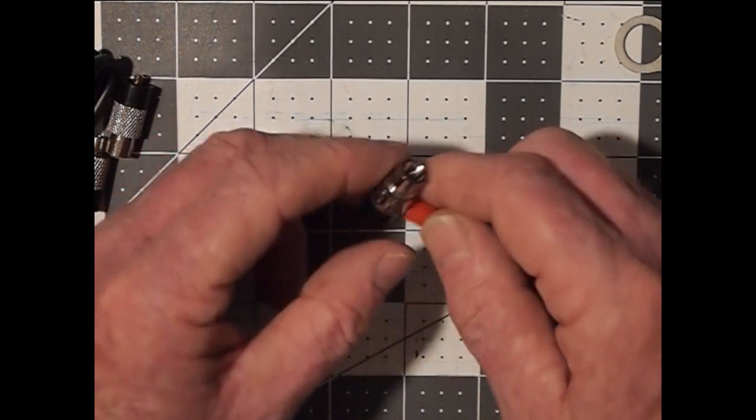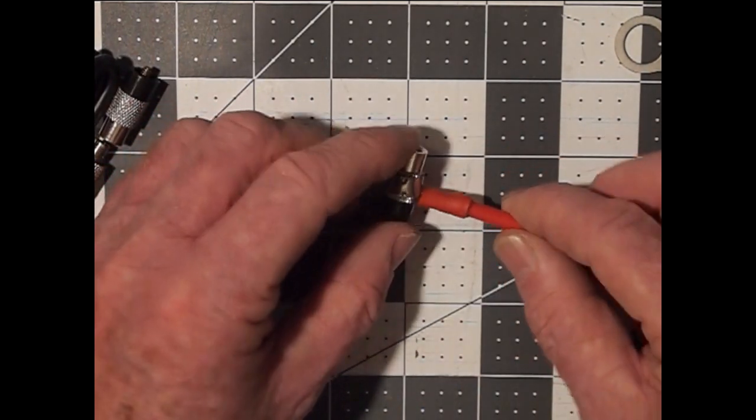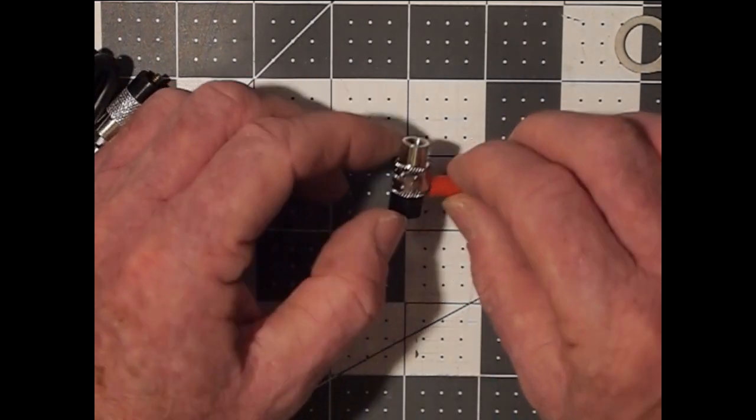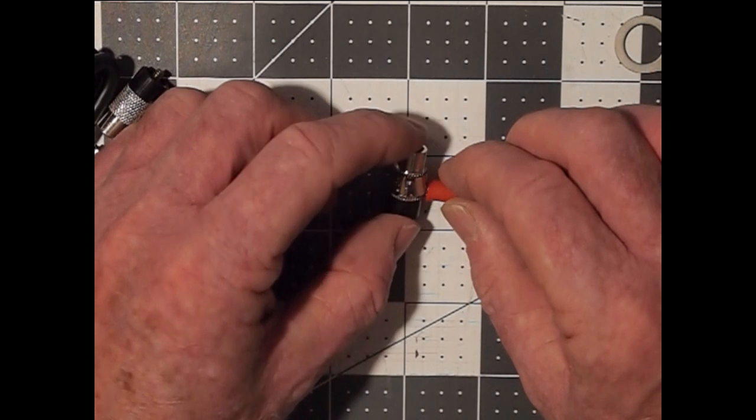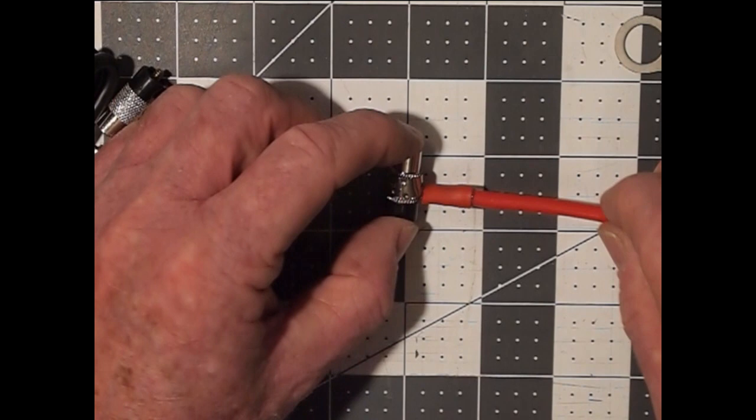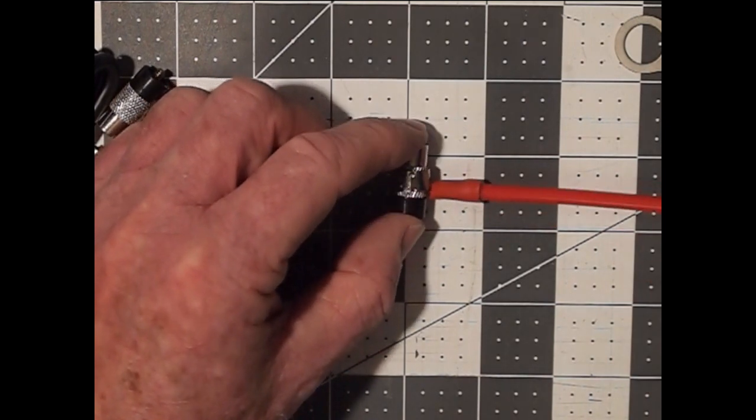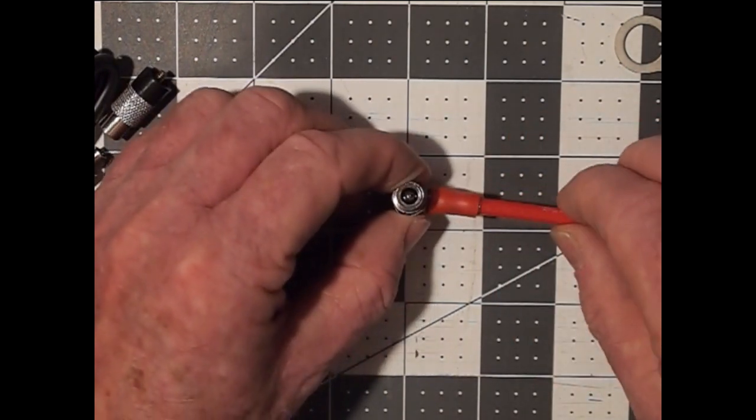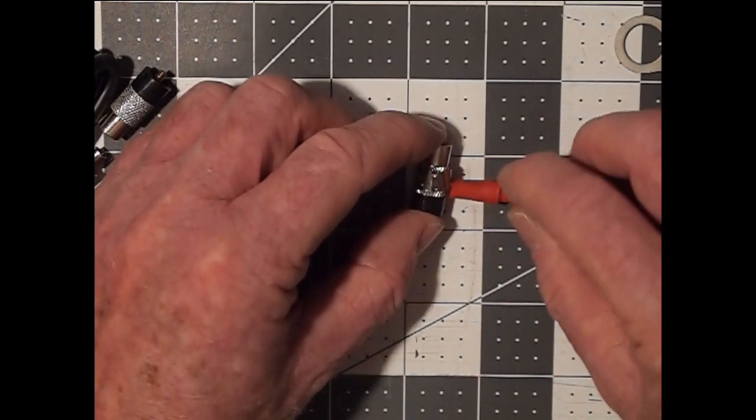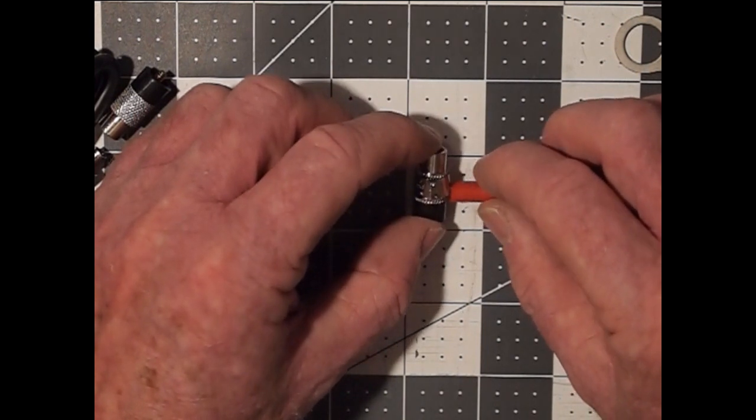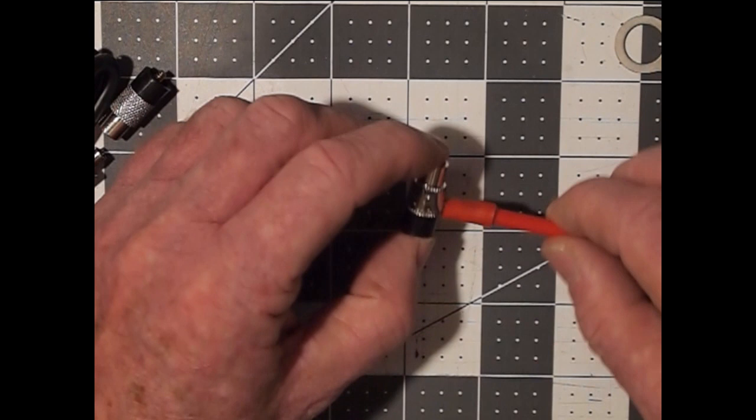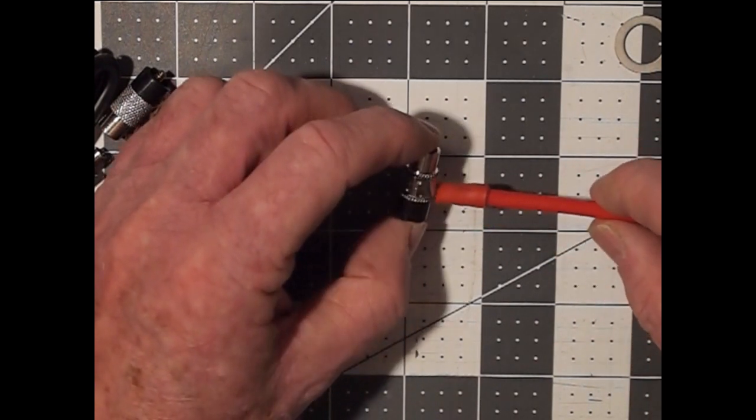Another benefit of that is now your counterpoise or rat tail, if you will, can now be exiting and attached to your base at a 90 degree angle, and so it's not being bent. With a solder joint, solder joints are brittle and eventually over time they'll break off. Whereas this one, it could still break off if it gets a lot of flex back and forth.